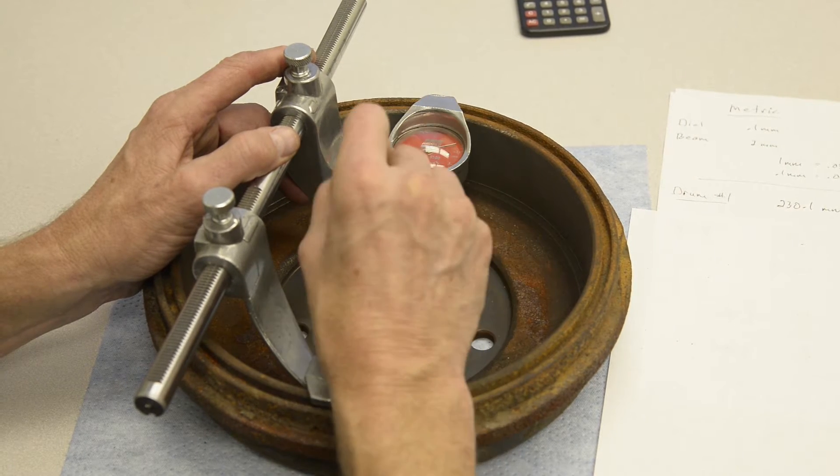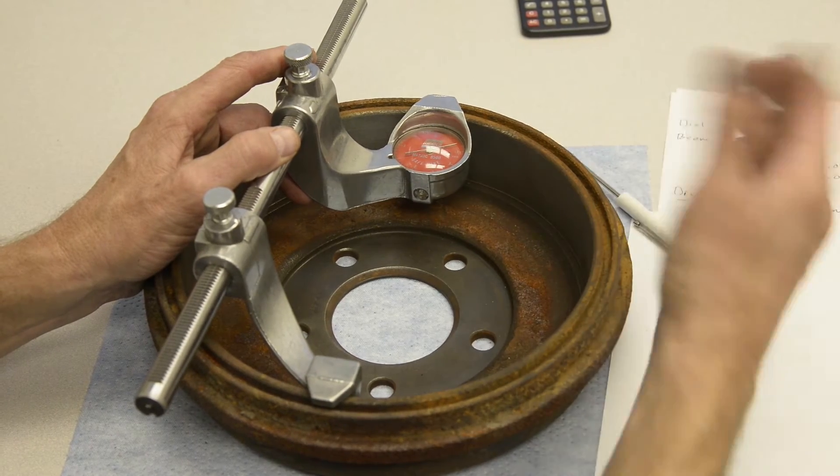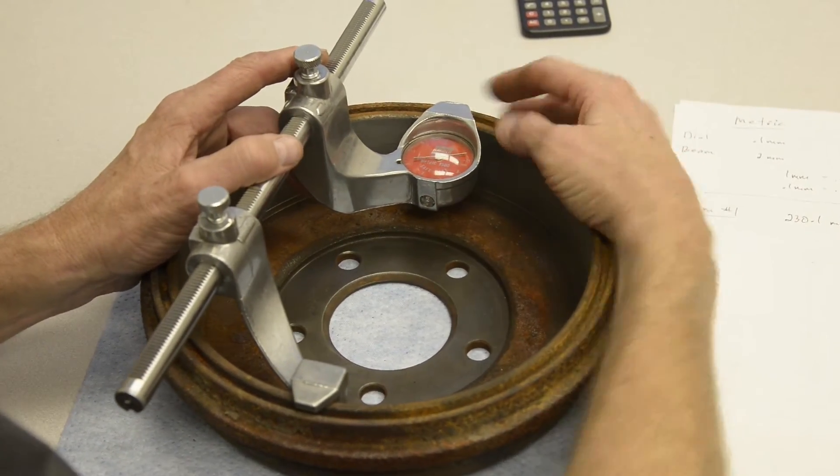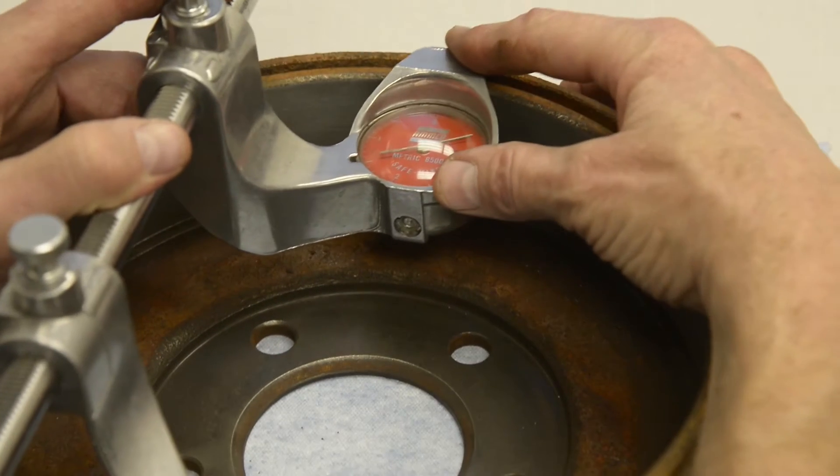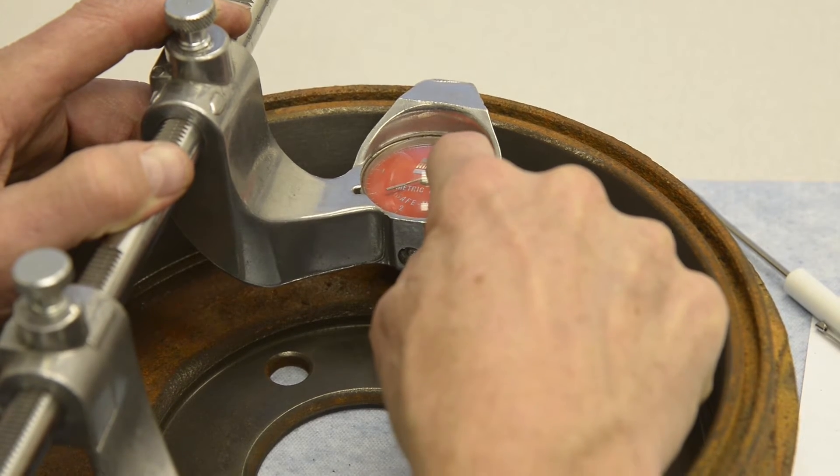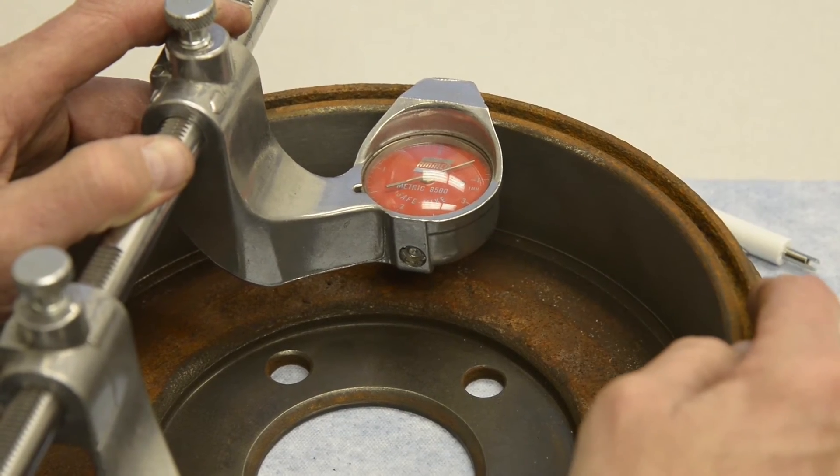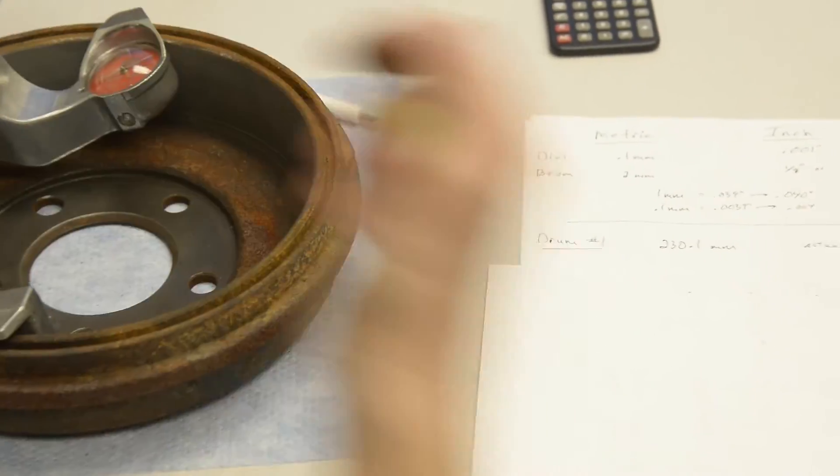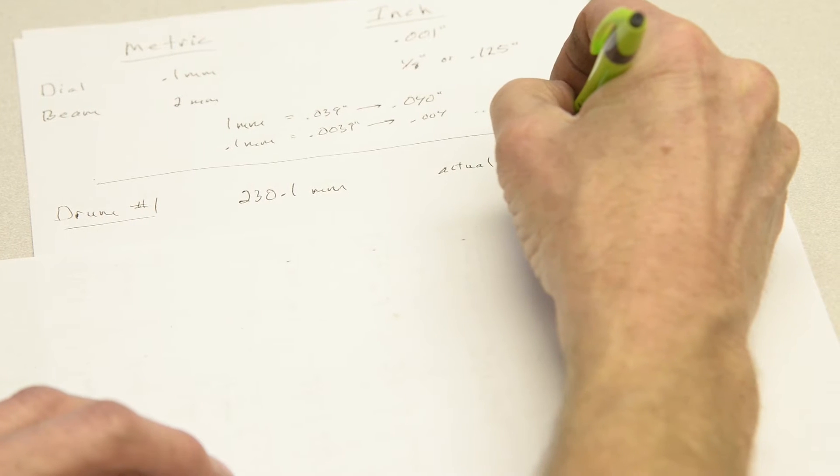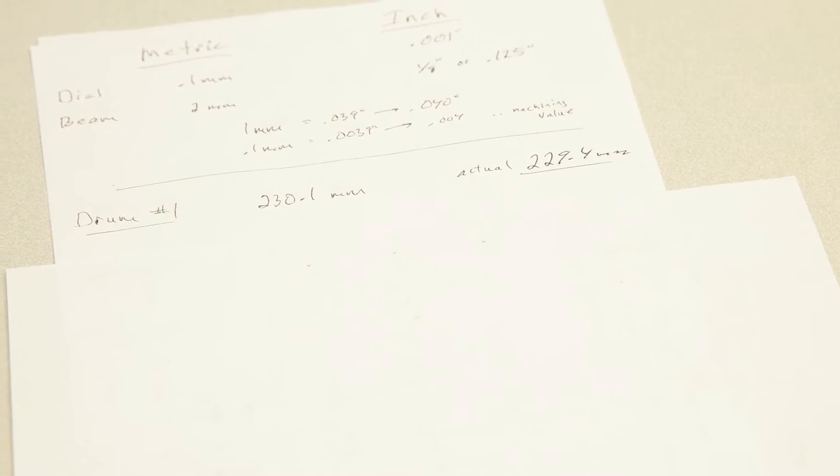If this needle had registered or read here on the zero, it would be exactly 230 millimeters, but we're smaller than that. Here's a minus one - that's a positive one, that's a positive two, a positive three. So we're smaller than 230, which is good news if I wanted to reuse this drum to put it back into service. The actual size, I'm going to rock it, and my maximum diameter I'm going to say is 229 plus four little lines above that, which makes 0.4 millimeters. So on paper, my actual size is 229.4 millimeters. That's drum number one.